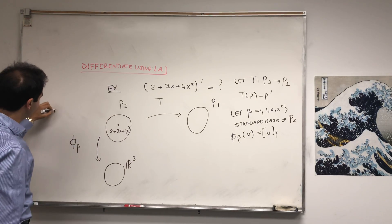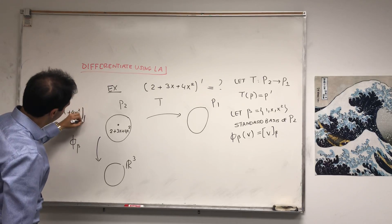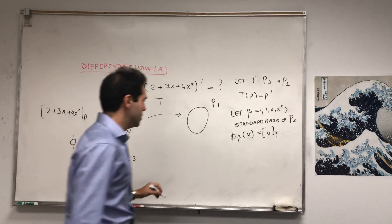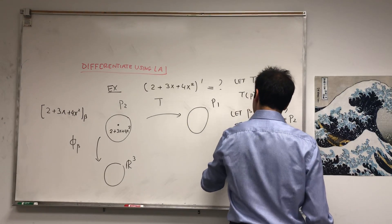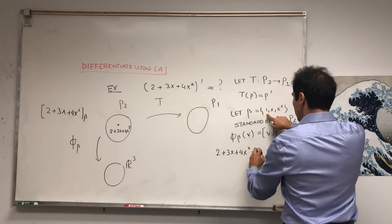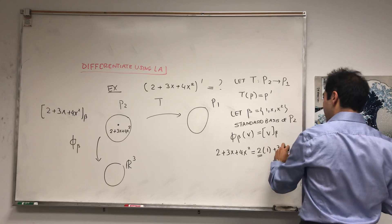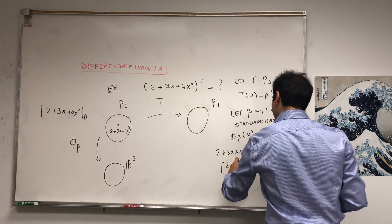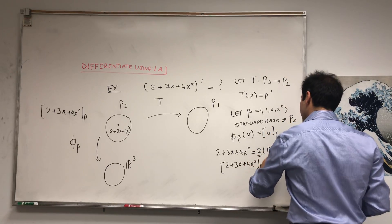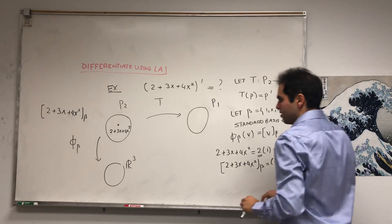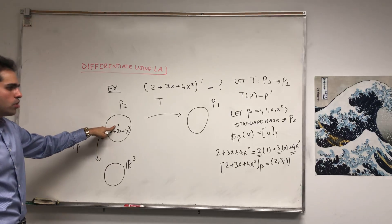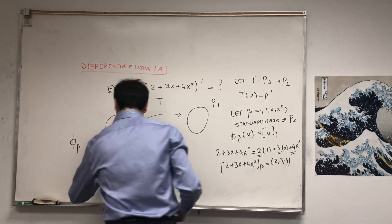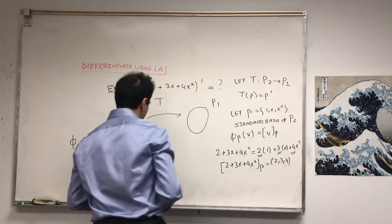So in this case, what is φ_B of this polynomial? Well, let's see. The coordinates of this are what? Well, to find coordinates, you need to express this abstract thing in terms of our basis. So notice, 2 plus 3x plus 4x squared, that's precisely 2 times 1 plus 3 times x plus 4 times x squared. So what this is telling us is that the coordinates of this abstract polynomial are just 2, 3, 4.